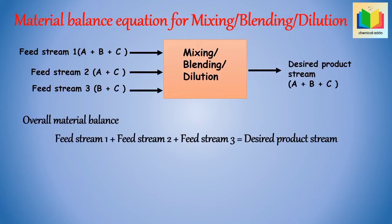Now suppose feed stream 1 contains components A, B and C; feed stream 2 contains components A and C; feed stream 3 contains components B and C; and the product stream contains components A, B and C. Since component A is present only in feed stream 1, feed stream 2 and the product stream,